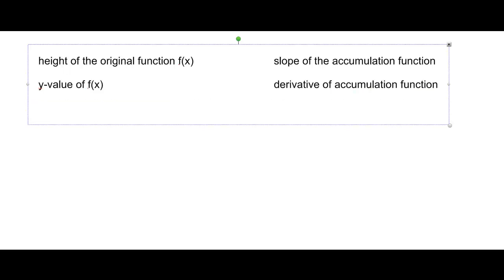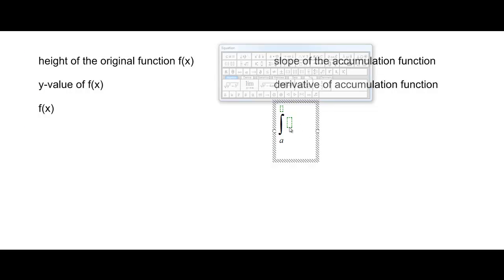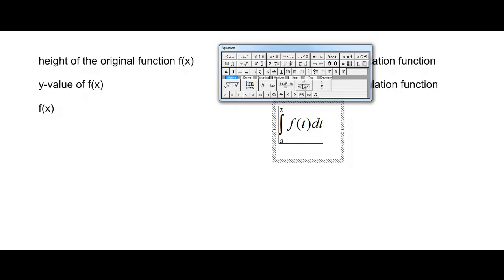What does this mean? This means that f(x) is directly related to the integral from a to x of f(t)dt. That's the accumulation function. Then if we take the slope of that function, we'd be taking the derivative in terms of x.